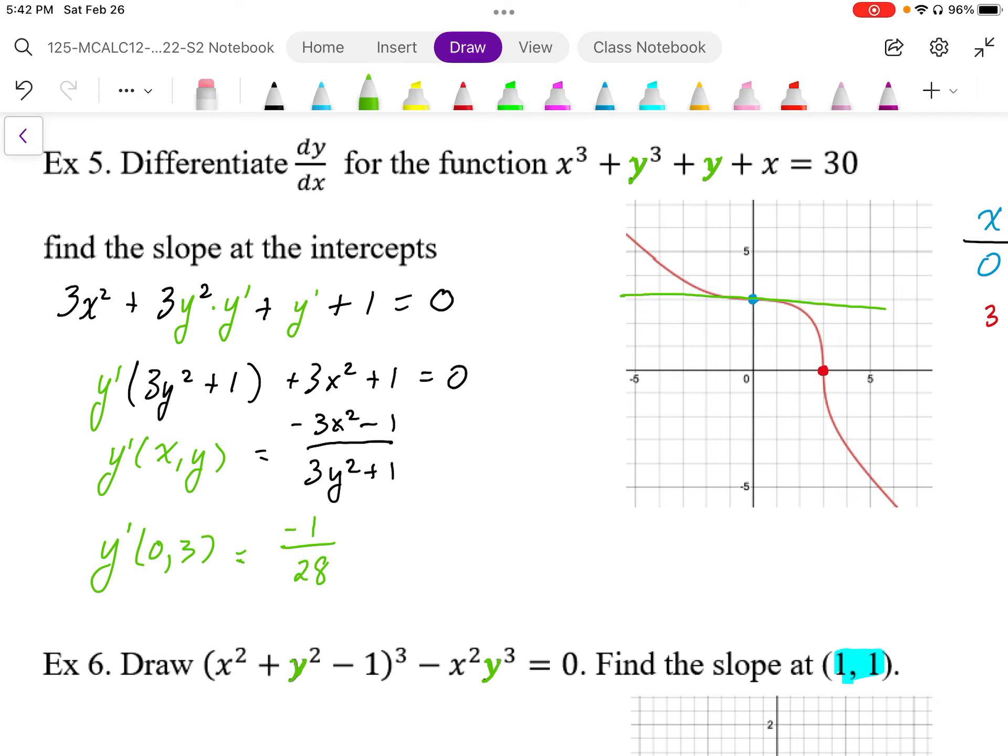And then for the other slope, the slope value at x is 3, y is 0. Plugging that into our equation, we get negative, it's going to be negative 28 over, well, y is 0, we get 1. So the slope is going to be negative 28. So it's a very steep slope going down in this way.